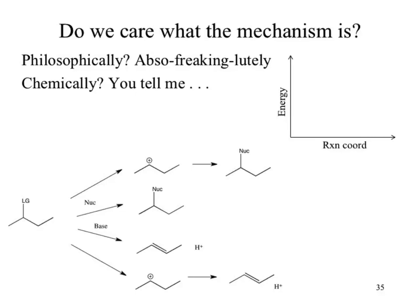One of the things we ended on was: do we care what the mechanism is? We're going to keep cycling back to address reasons why we care about mechanisms, because a lot of it comes down to our ability to predict which mechanism is important. From a chemical perspective, reactions that produce one product are always more important. SN2 and E2 almost exclusively form one product, while SN1 and E1 tend to produce multiple products, making them less consistent and less likely to be used.